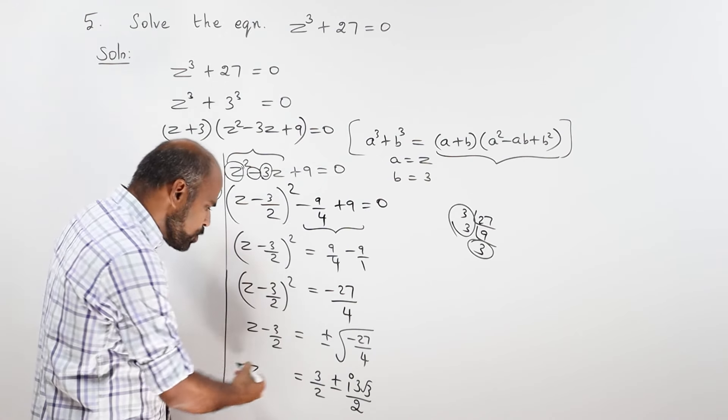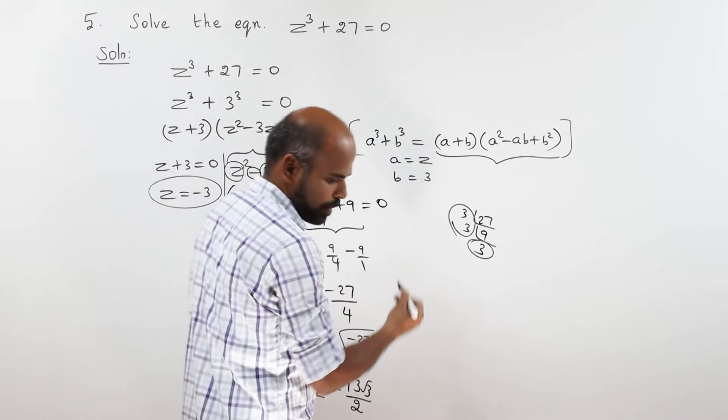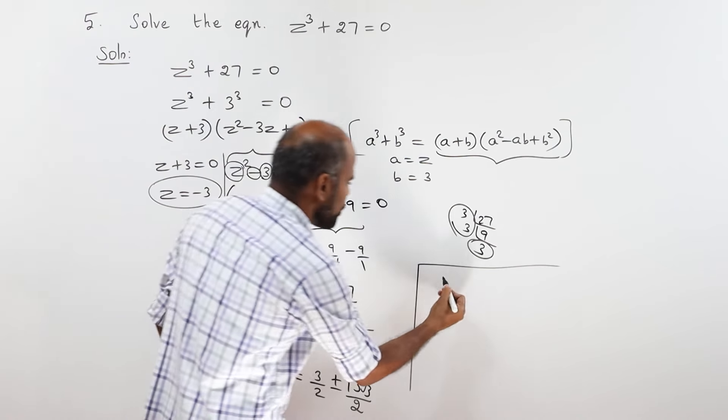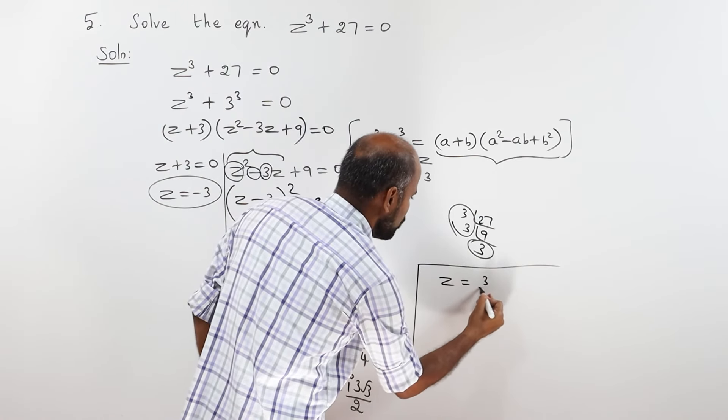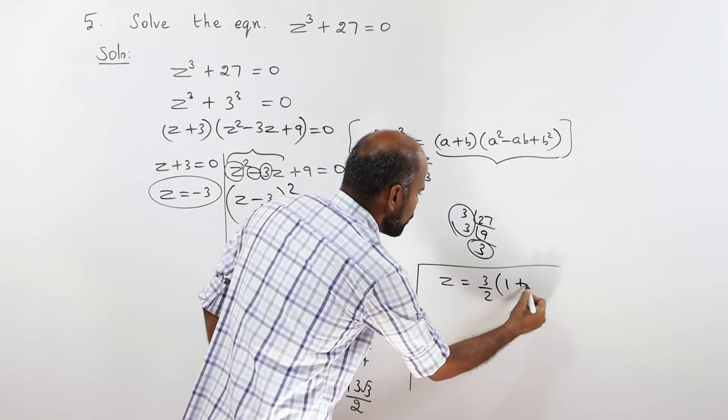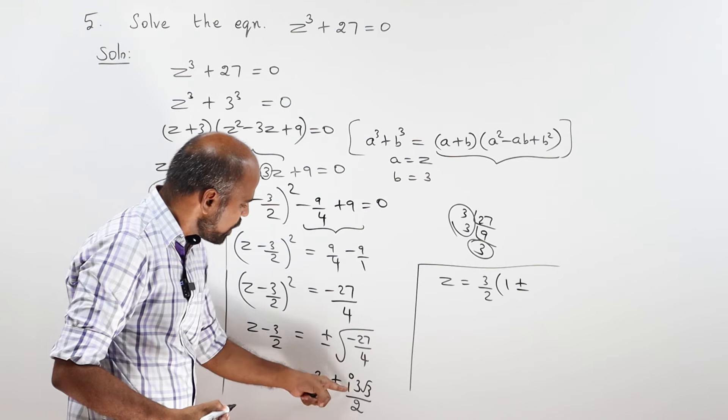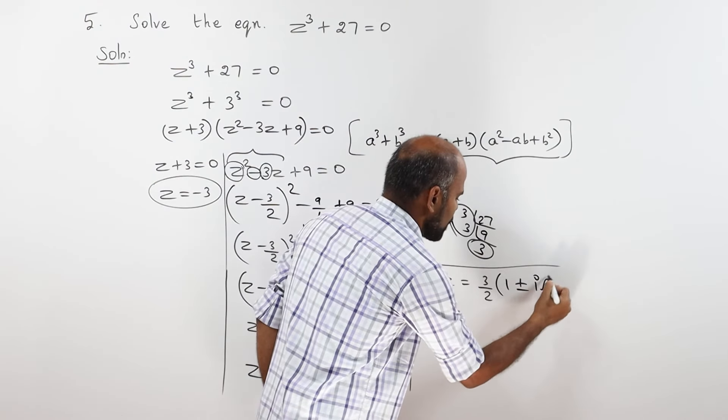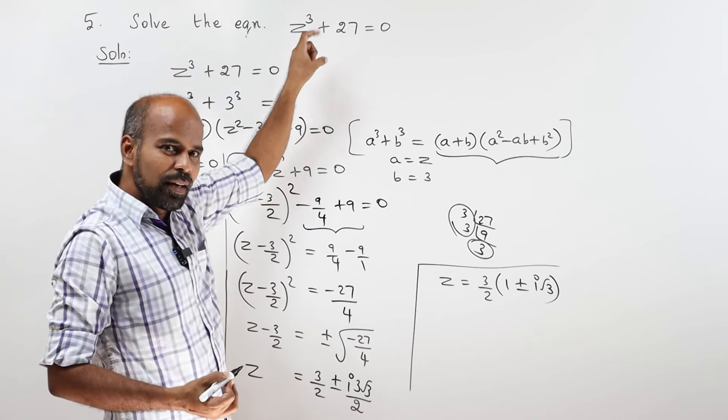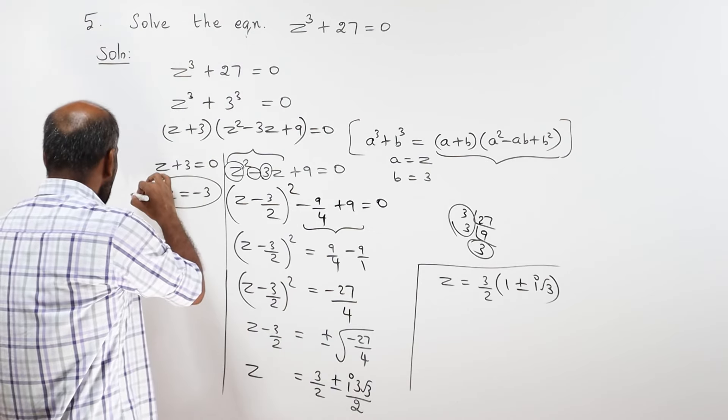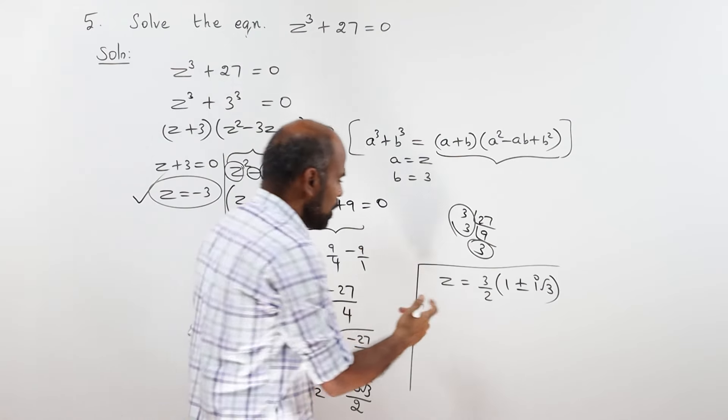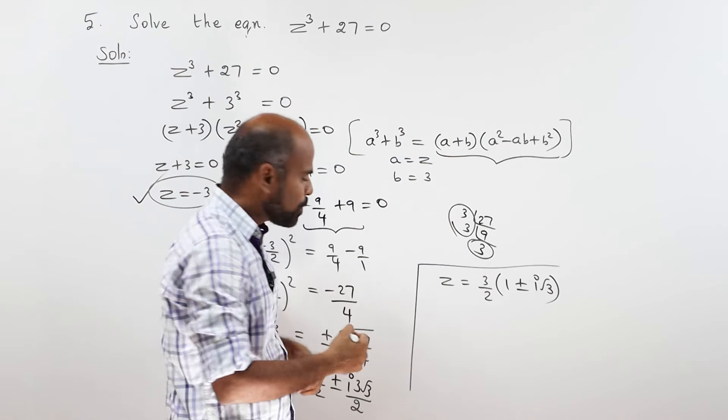So, z equal to minus 3 by 2 plus or minus 3 by 2 i root 3. Now in the equation the degree is 3, highest power 3. Then how many solutions are there? 3 solutions. Here we have one solution. Here, plus solution, minus solution.